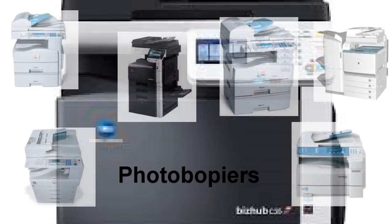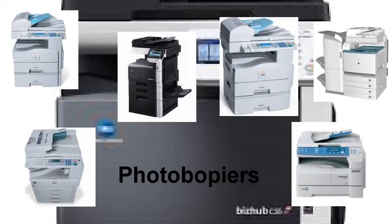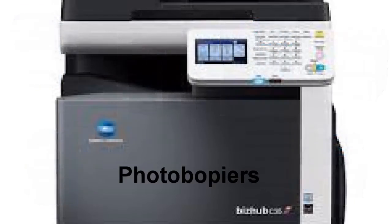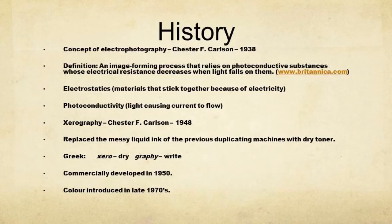Photocopiers contain many uses of applied physics in their inner workings. In 1938, Chester F. Carlson came up with the concept of electrophotography, which is an image forming process that relies on photoconductive substances whose electrical resistance decreases when light falls on them. He arrived at this by putting together two physics phenomena that no one else had thought to combine: electrostatics and photoconductivity.